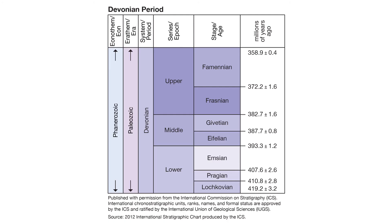Stratigraphic units across the world can be correlated with each other based on their lithologies, fossils, and ages. When two stratigraphic units can be correlated, it means that those strata were laid down or deposited at the same time. When stratigraphic units can be correlated globally, they are organized into larger chronostratigraphic units, or bodies of rock representing intervals of time in Earth's past. Groups and supergroups which can be correlated make up globally recognizable stages, which are hierarchically organized into series, systems, erythems, and ionothems.